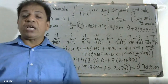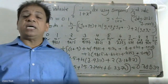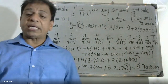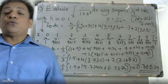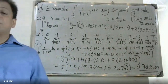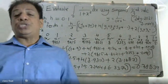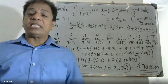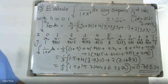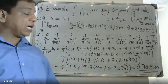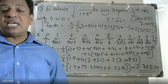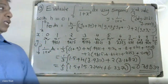To summarize: first and last terms are added once, odd-indexed terms are multiplied by 4, and remaining even-indexed terms are multiplied by 2. The final answer is 0.78539.